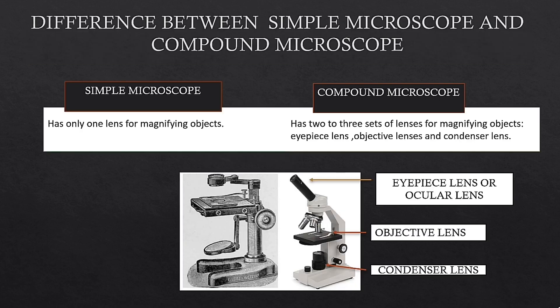Now we will see the difference between a simple microscope and a compound microscope. A simple microscope has only one lens for magnifying an object.